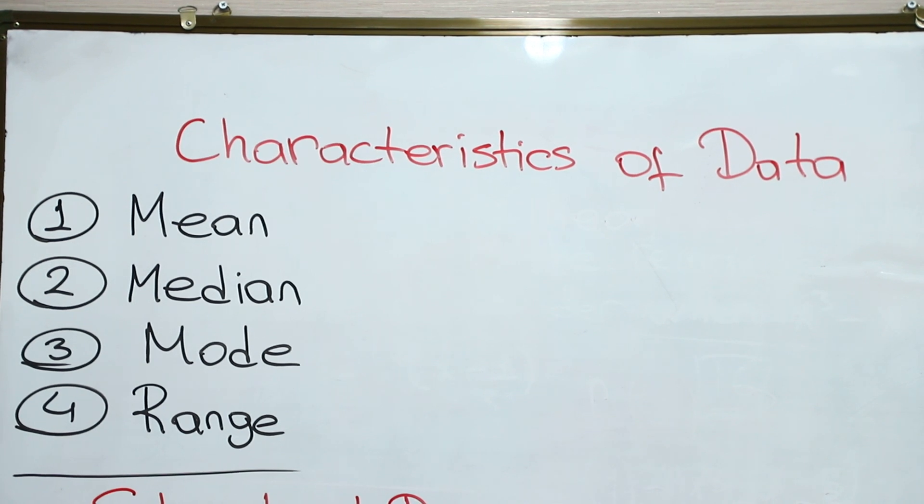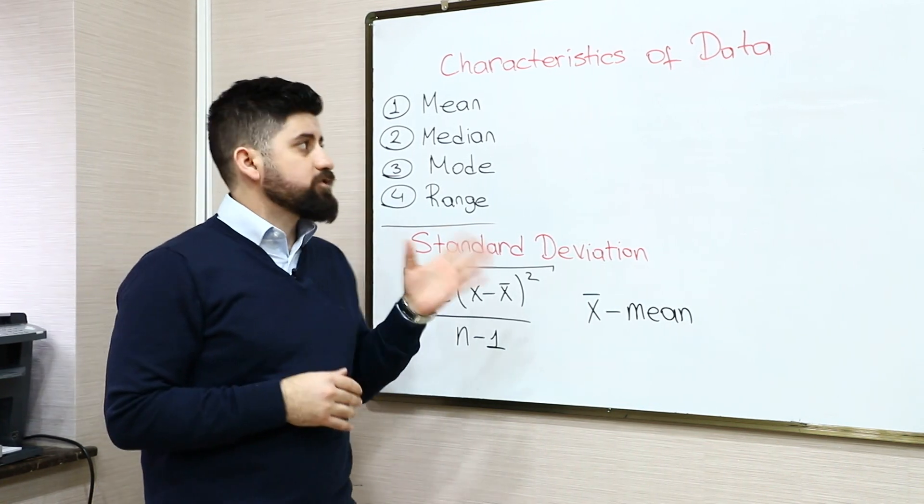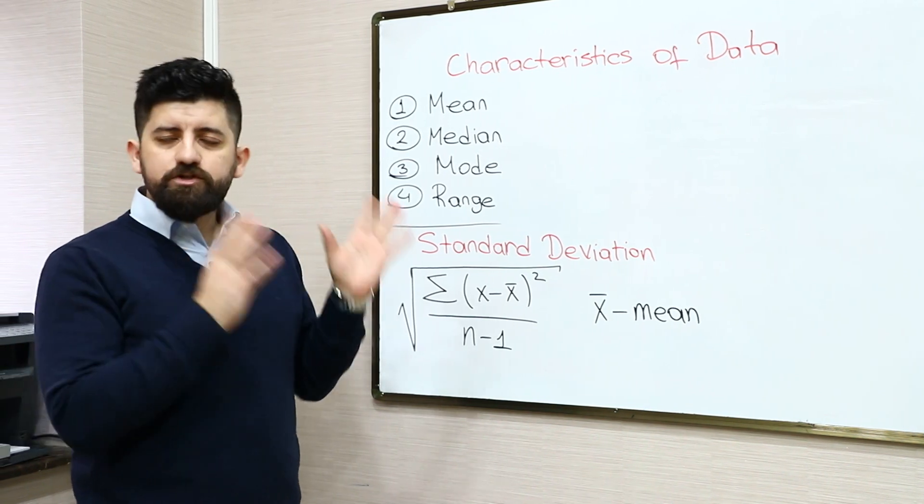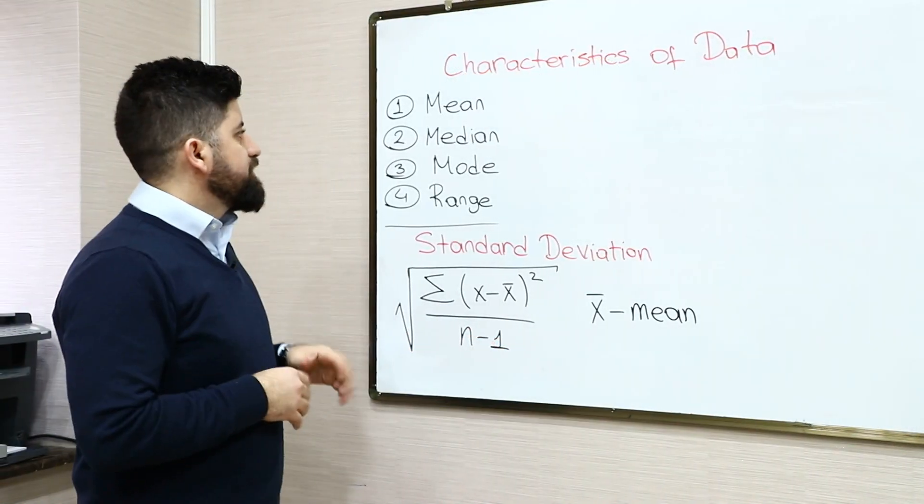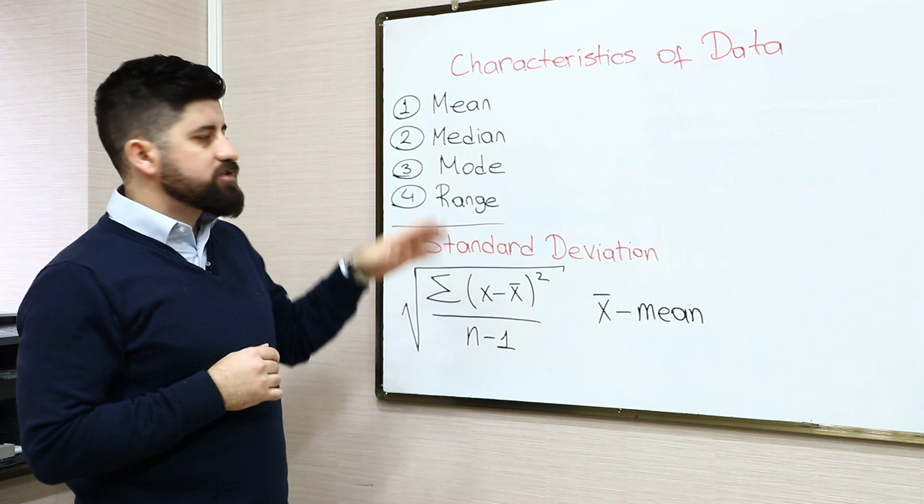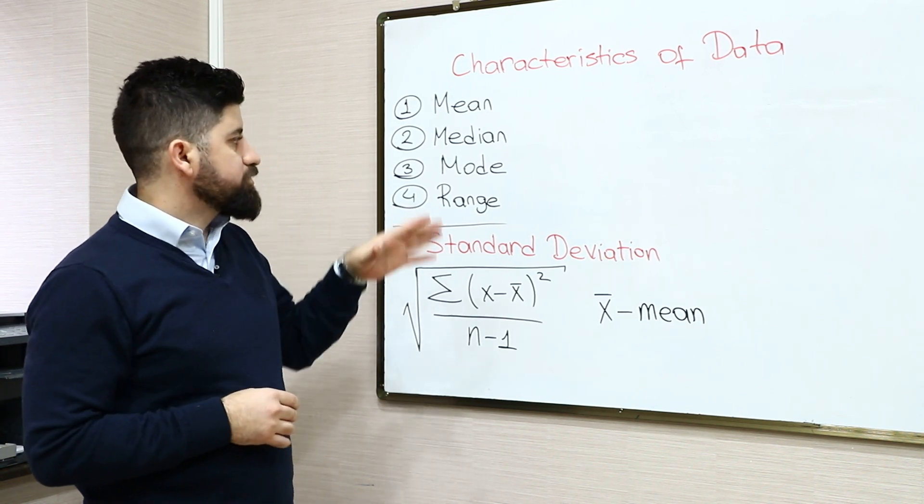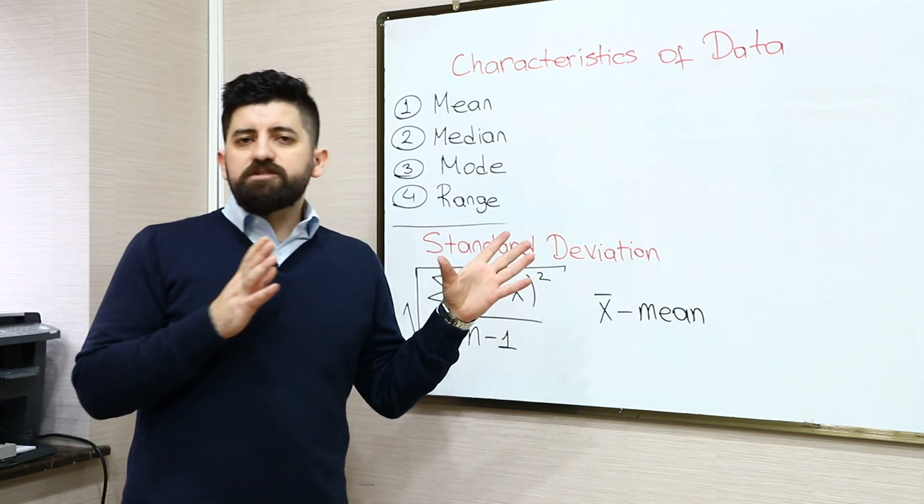Mean is sometimes called arithmetic mean or average, which is the sum of the sample divided by the size of the sample. In other words, the sum of the numbers divided by the number of numbers. The median is the middle number of the data set, and mode is the number that appears most in the data.